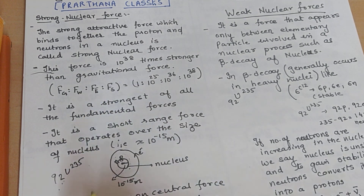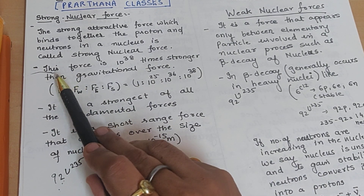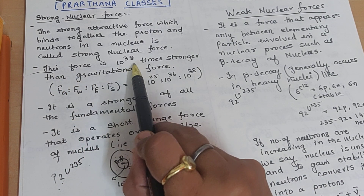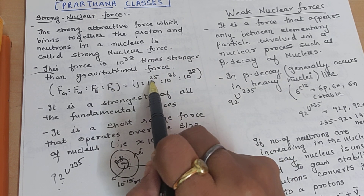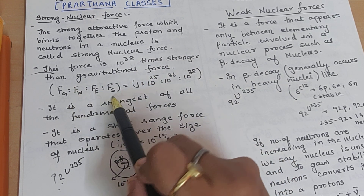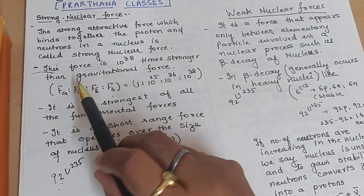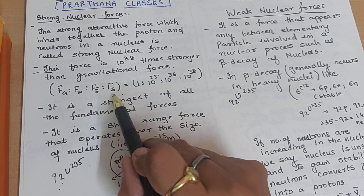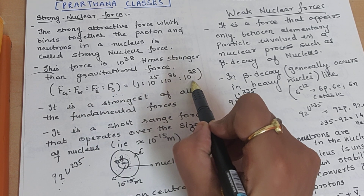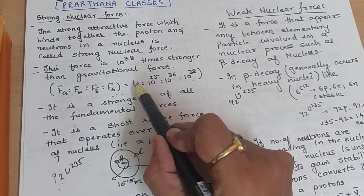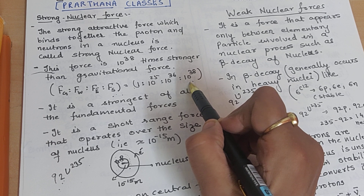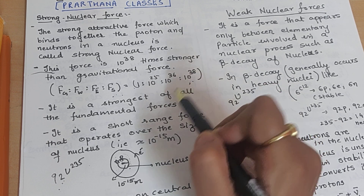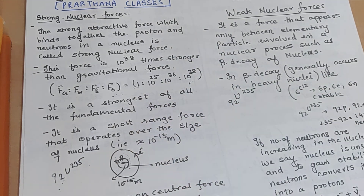Moving to the next property: this force is 10 raise to 38 times stronger than the gravitational force. I have mentioned this ratio before — electromagnetic force and gravitational force. Keep this ratio in mind, it is standard. Strong nuclear force is 10 raise to 38 times stronger with respect to gravitation. In fact, it is the strongest of all the fundamental forces.